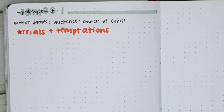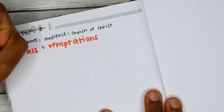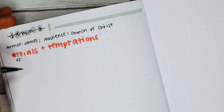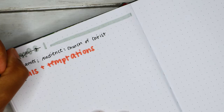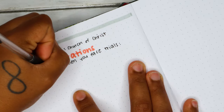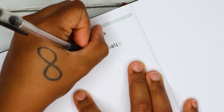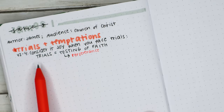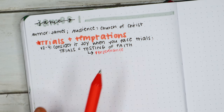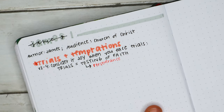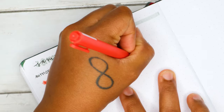Reading verse two: 'Consider it joy whenever you face trials of many kinds.' Going down to verse four, it's talking about perseverance. So I wrote: consider it joy when you face trials — trials equal the testing of faith, which means perseverance, and perseverance allows us to be spiritually mature.